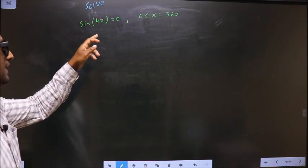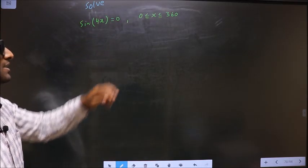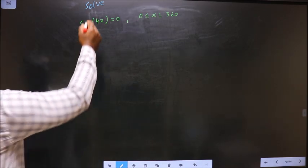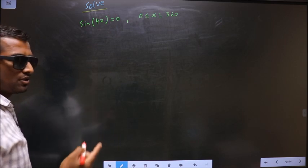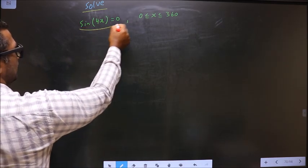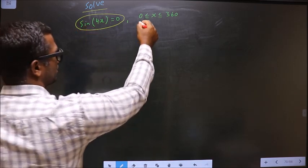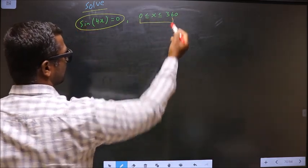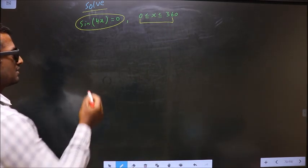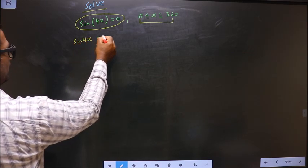Solve sin(4x) = 0 where x lies in the interval 0 to 360 degrees. We need to find the values of x satisfying this equation that also lie in the interval 0 to 360 degrees. The given equation is sin(4x) = 0.